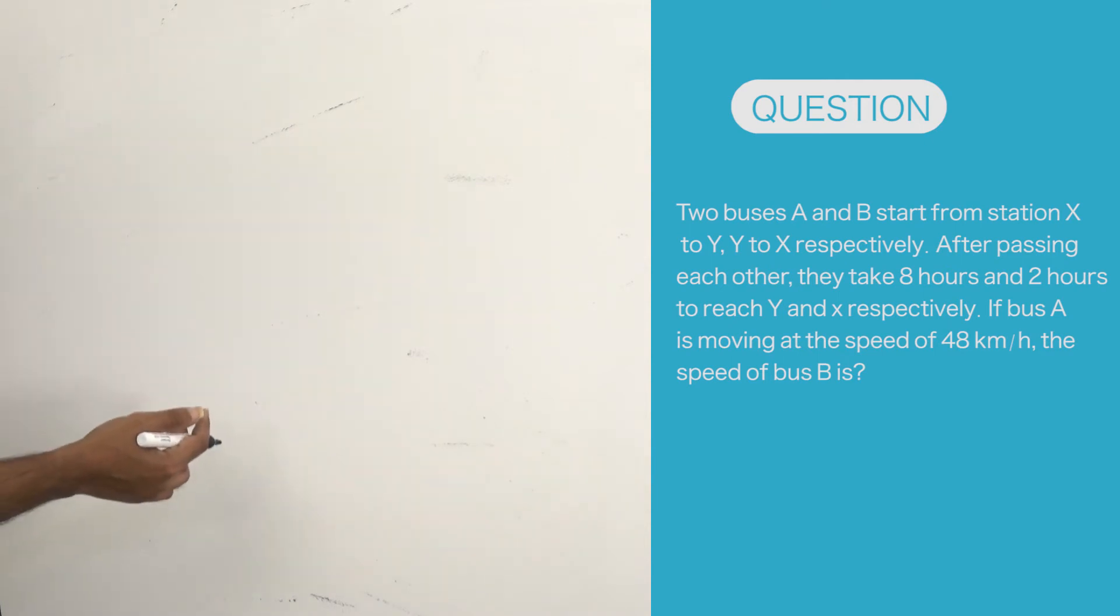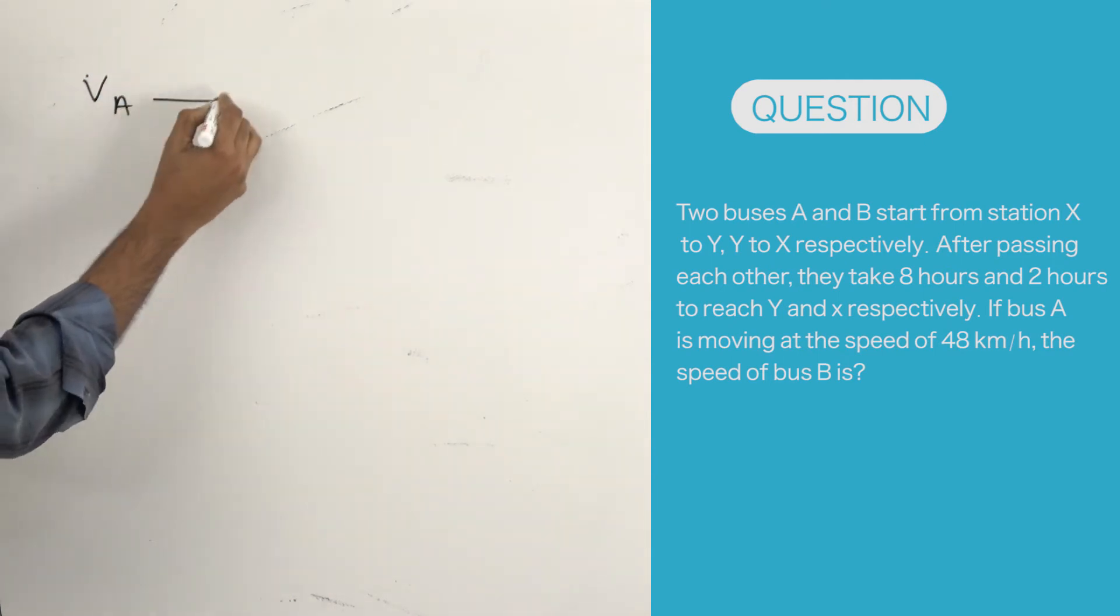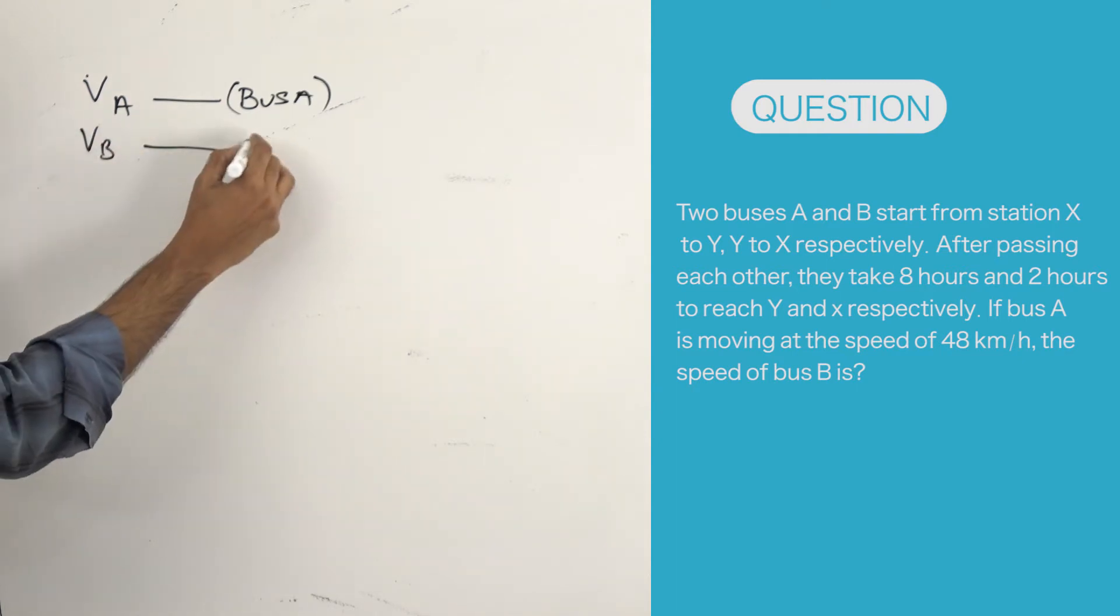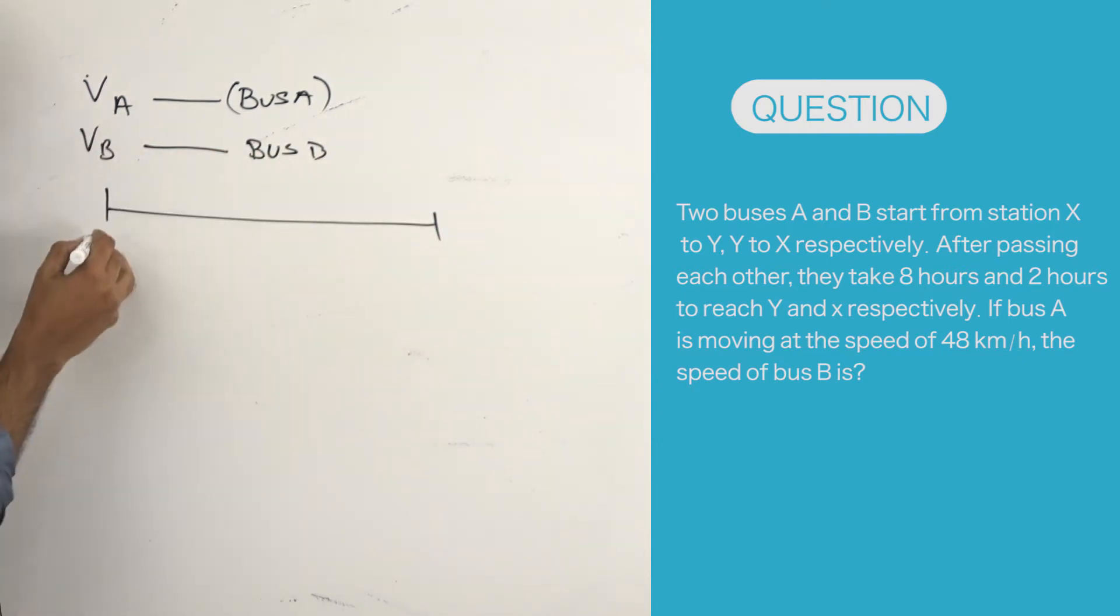Let me write the important points. Let V_A be the speed of bus A, whereas V_B will be the speed of bus B. Now, the distance between X and Y we don't know.